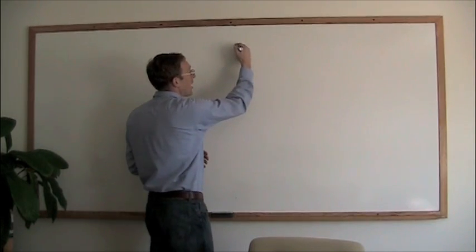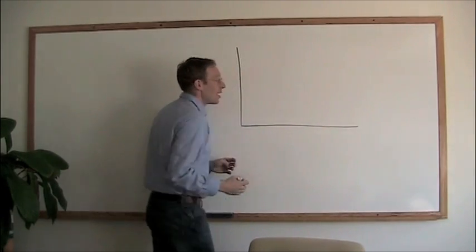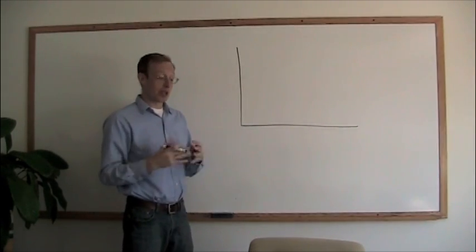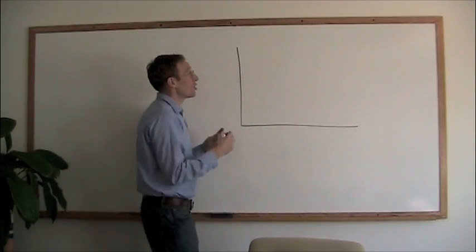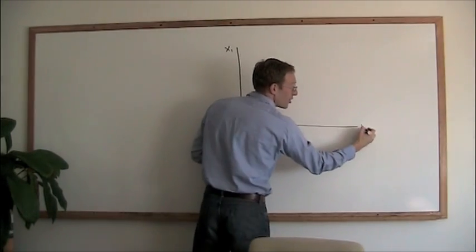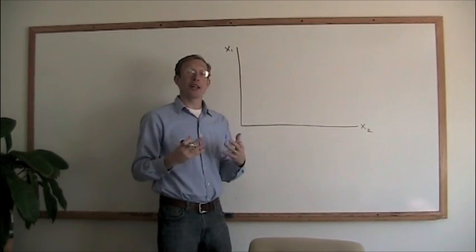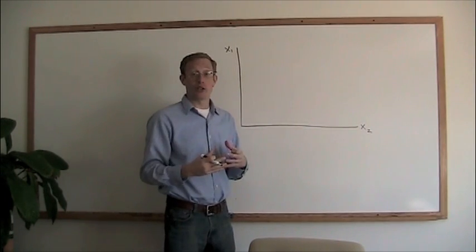Now, what we're going to look at here is a basic budget constraint where we have two goods, we'll call them Good X1 and Good X2. So we're buying, we're spending all of our income on two potential goods.